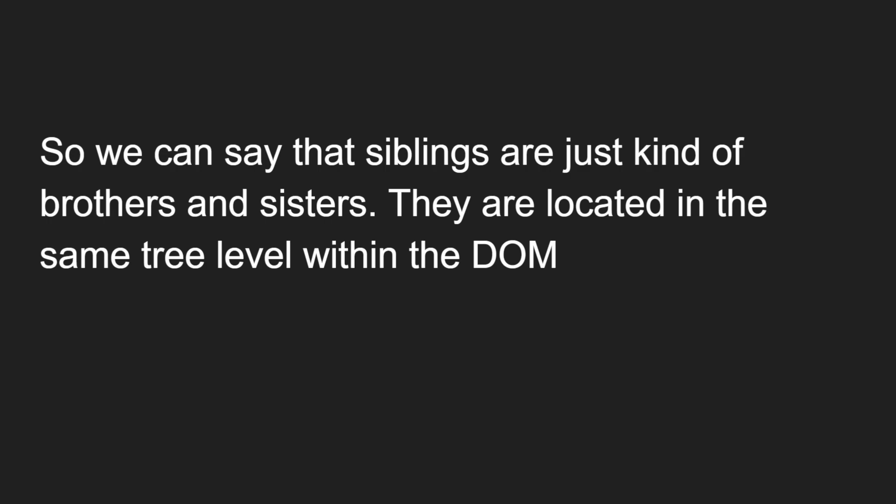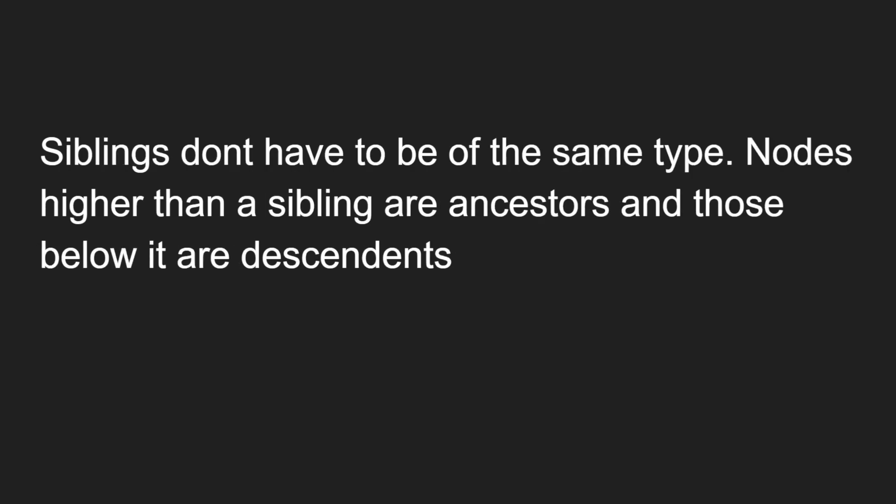Siblings are located on the same tree level within the DOM. Siblings don't have to be of the same node type — you can have a text node, element node, or comment node all as siblings together. Nodes higher than a sibling are called ancestors and those below are called descendants.